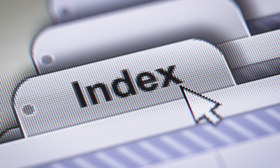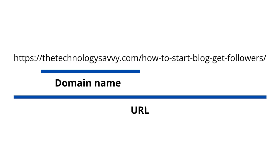Now let me talk about indexing. Imagine the work of a librarian who organizes books by themes — history, science, medicine, etc. Search engines do the same: they index all the URLs by themes. A URL stands for Uniform Resource Locator. For example, thetechnologysavvy.com is the domain name, but the complete URL includes the full path, like /how-to-start-blog-get-followers. Google uses a massive database called Caffeine, and Bing has its own index database.